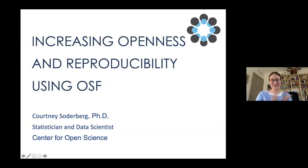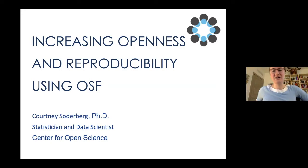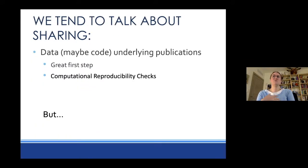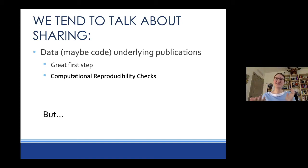Let me just share my slides. My name is Courtney Soderbergh. Today I'm going to talk about increasing openness and specifically how to do that using the OSF. I work for the Center for Open Science, which is a nonprofit in Charlottesville, Virginia. The mission of COS is to increase the openness, reproducibility, and transparency of scholarly work. When we think about sharing, a lot of times the first thing that comes to mind is data or maybe code underlying a publication — and that is a great first step. If you have the data and code, it allows you to do a computational reproducibility check. But data isn't the only thing you might want to know if you're trying to reproduce somebody else's work or your own work to build off of it.